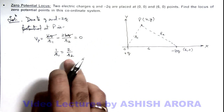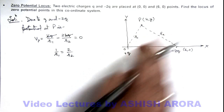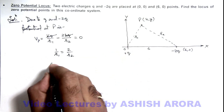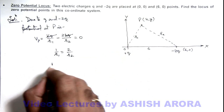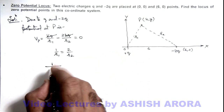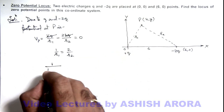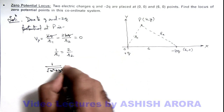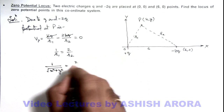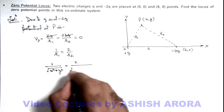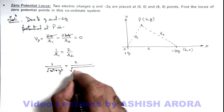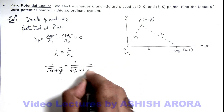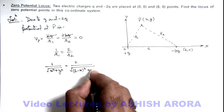If we substitute the values of r1 and r2 using the distance formula, r1 equals the square root of x² plus y², and r2 equals the square root of (6 minus x)² plus y².